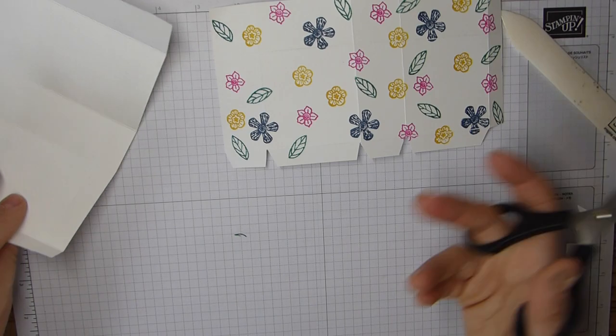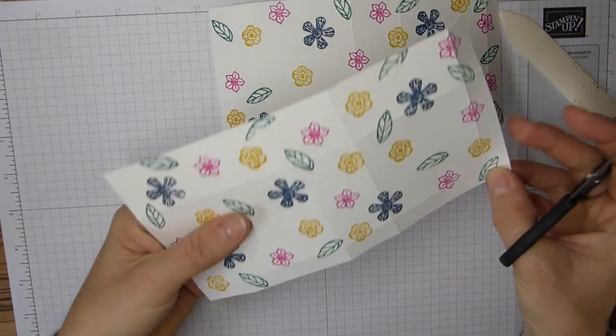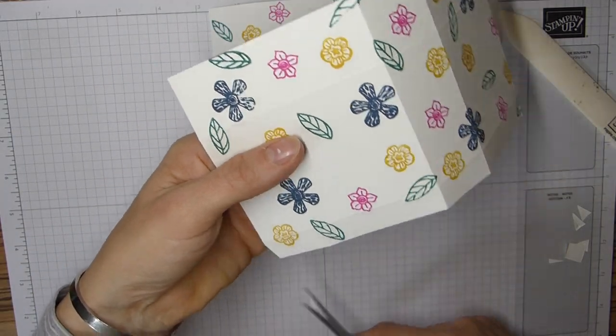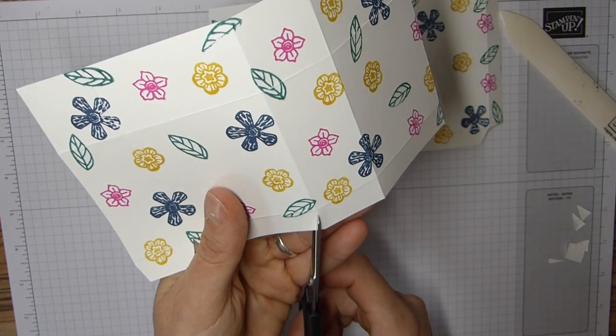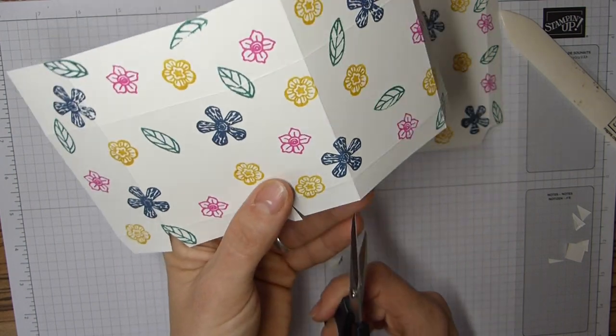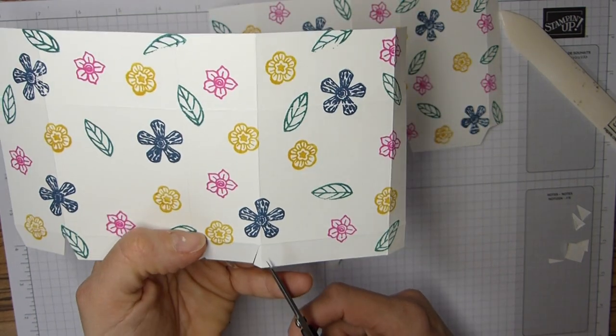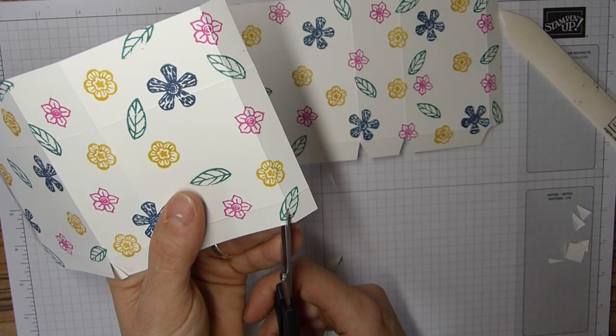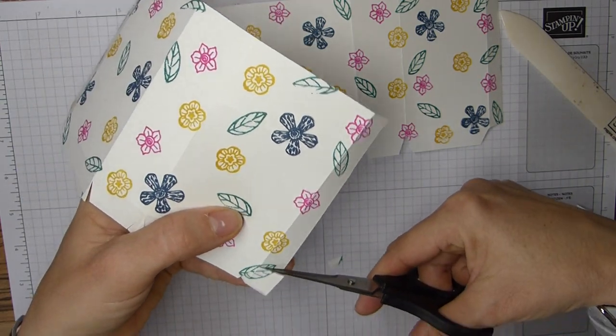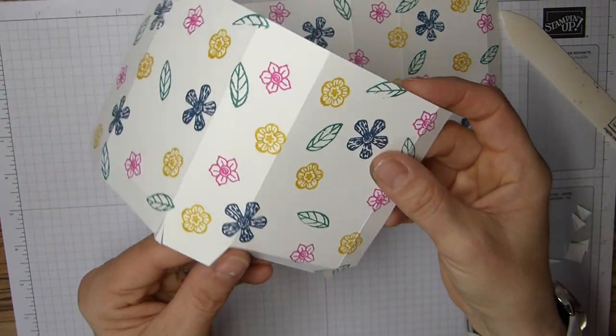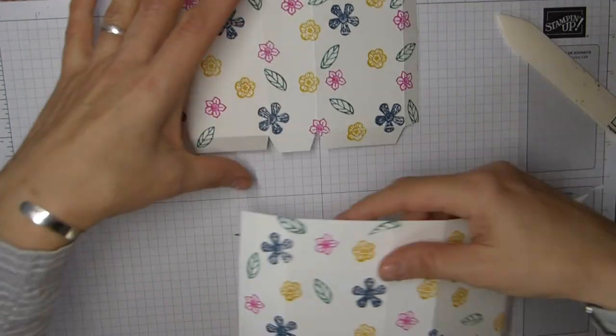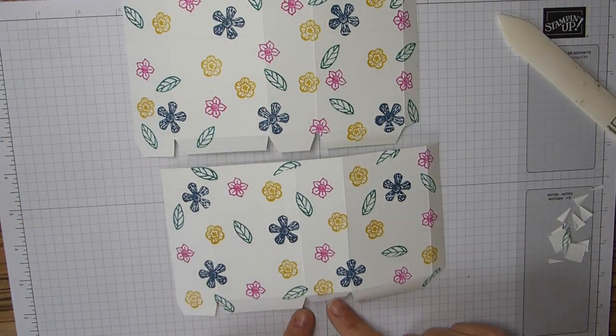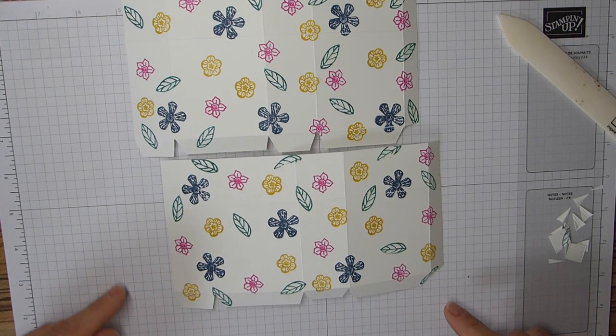I'm going to do that again on this side, so just cutting our little wedges all the way along, and then the last one get rid of completely. There we go. So you have two pieces now that have the notches out of the bottom.